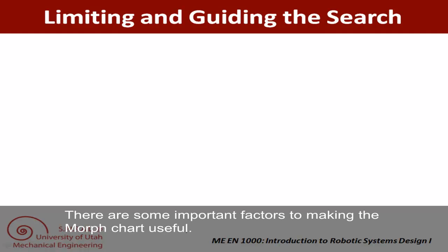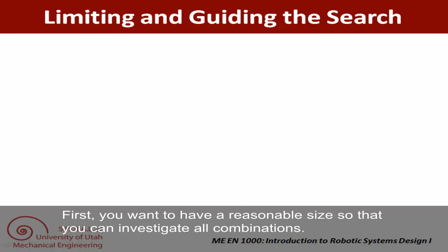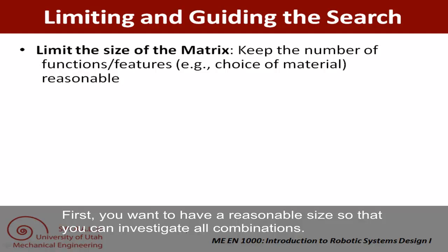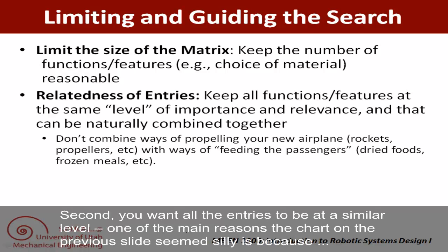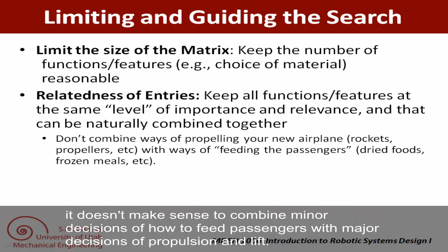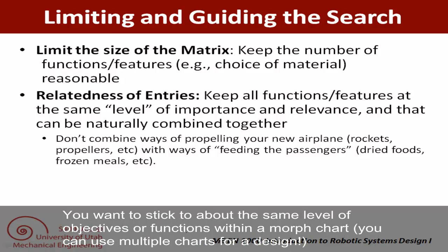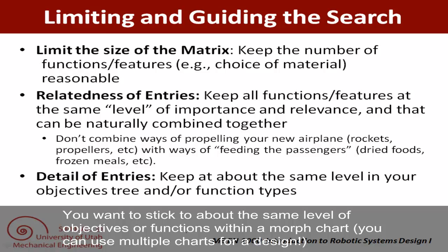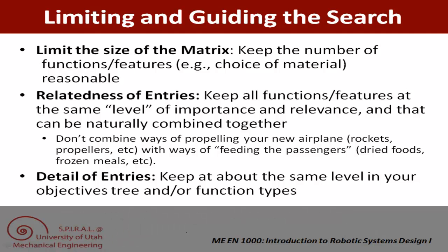There are some important factors to making your morph charts useful. First, you want to have a reasonable size so that you can truly investigate all combinations. Second, you want all the entries to be at a similar level. One of the main reasons the airplane chart seemed silly is because it doesn't make sense to combine minor decisions about how to feed passengers with major decisions about propulsion and lift. You want to stick to about the same level of objectives or functions, and you can use lots of morph charts throughout the course of your design.